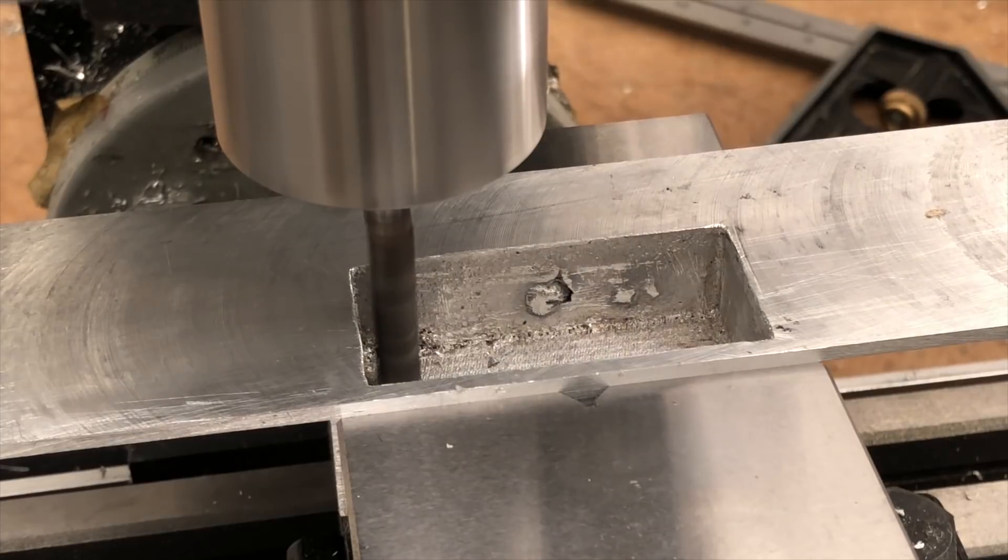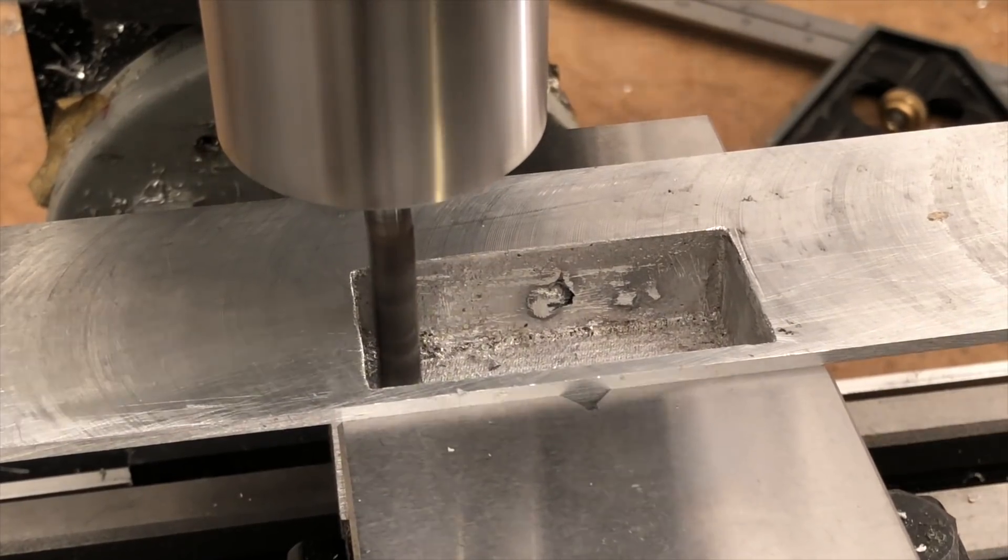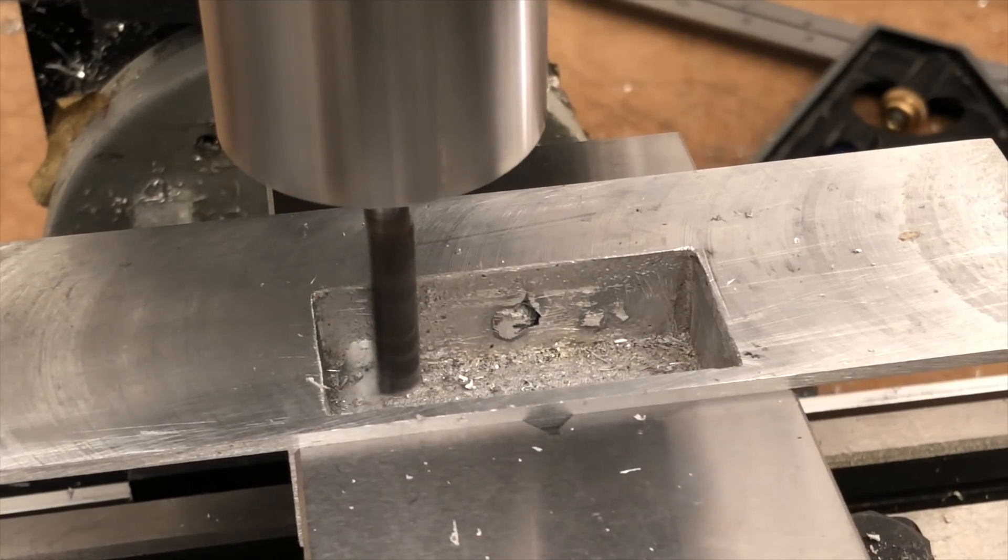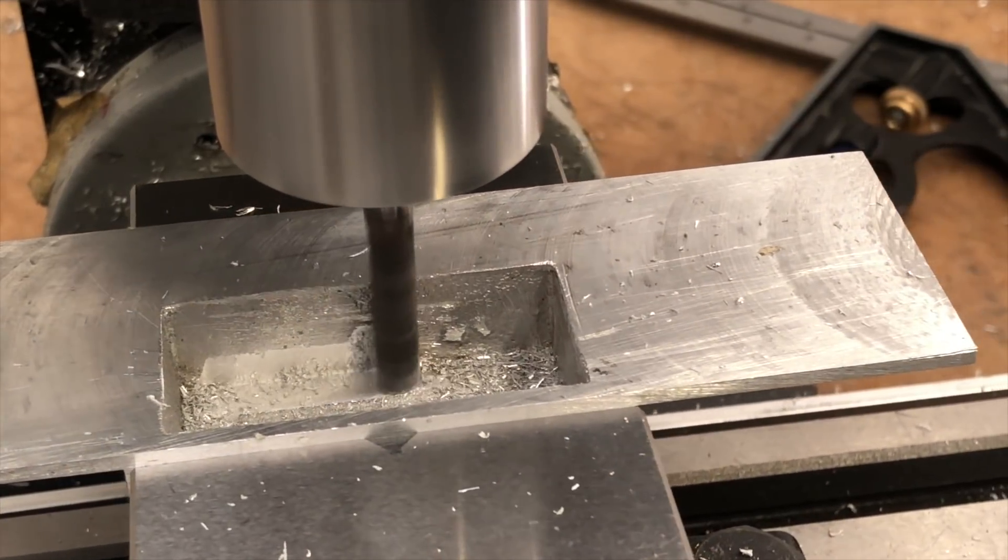Back at the mill, I flip the part upside down to mill out the pocket for the rangefinder. This part is going to need to be a pretty snug fit, so I'm using a small diameter end mill to keep the corners as tight as possible.